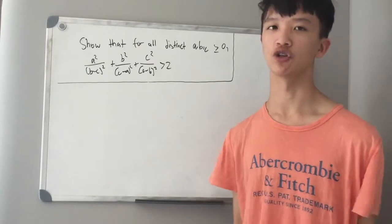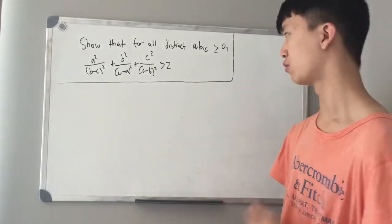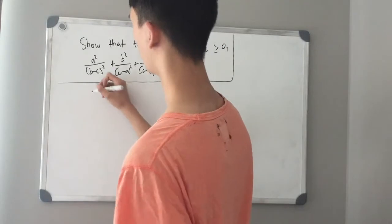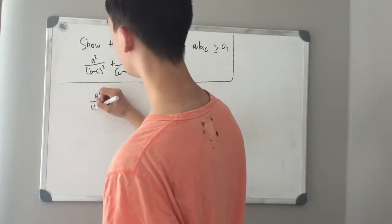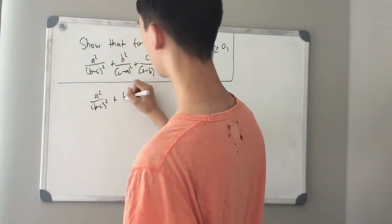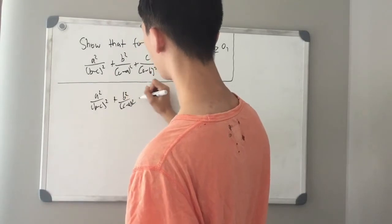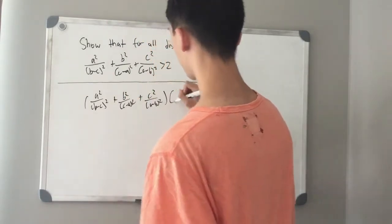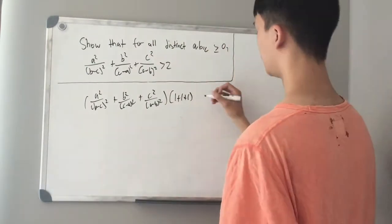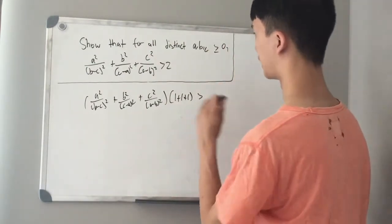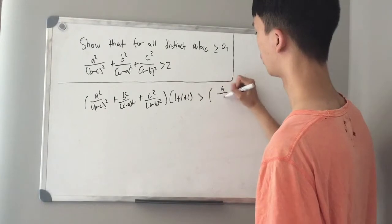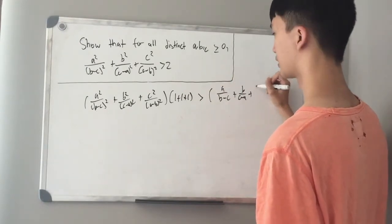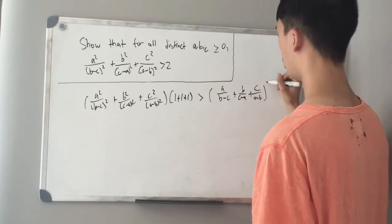In this video I'm going to show you a different solution, one that's a little bit more complete. Applying Cauchy-Schwarz to this expression will give us: a squared over (b minus c) squared plus b squared over (c minus a) squared plus c squared over (a minus b) squared, all times (1 plus 1 plus 1), is strictly greater than — since a, b, and c are unique — a over (b minus c) plus b over (c minus a) plus c over (a minus b), all squared.